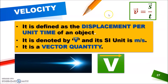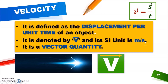Now if we provide direction to speed — basically speed with direction is also known as velocity. It is defined as the displacement per unit time. Because velocity is a vector quantity, it has a direction arrow in its symbol. This is the symbol of velocity and this is the symbol of displacement. Its SI unit is the same as speed — meters per second.